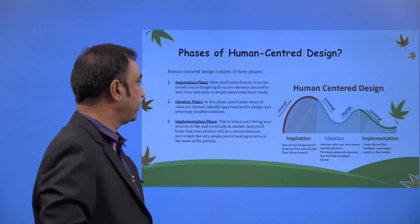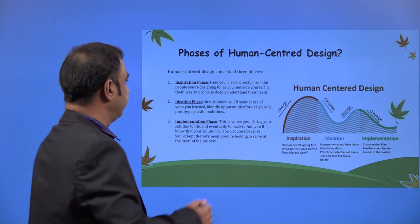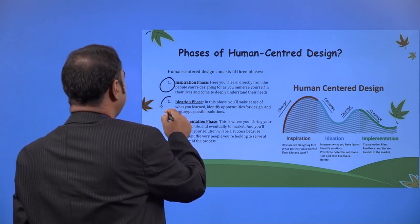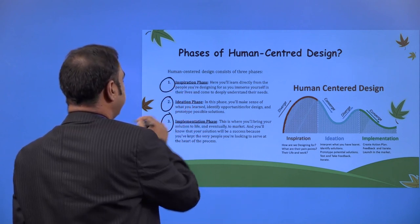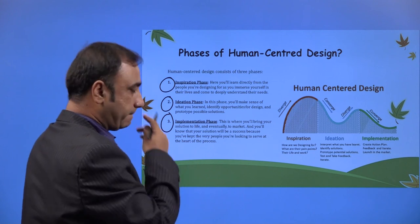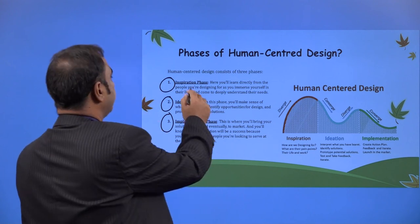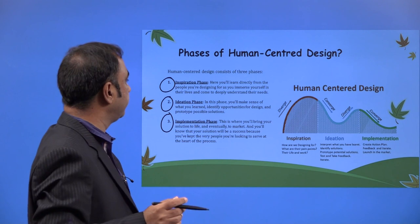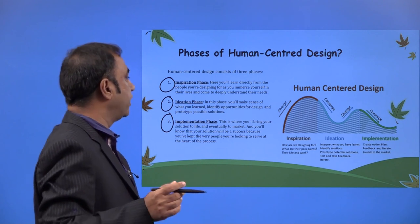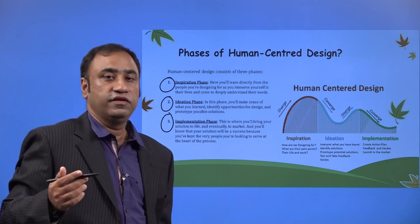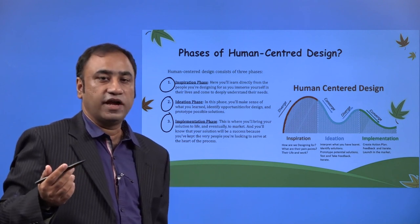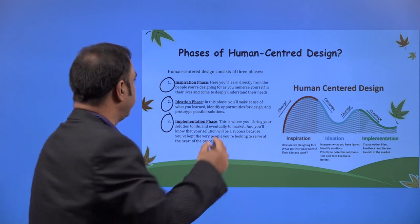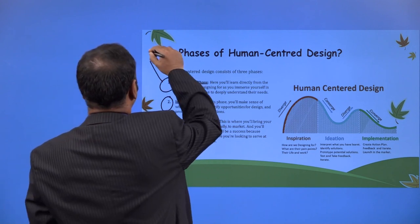Human-Centered Design has three phases: the Inspiration phase, the Ideation phase, and the Implementation phase. In the Inspiration phase, you learn directly from the people you are designing for — you understand the needs and problems they are facing. Understanding the problem and the need is the Inspiration phase.